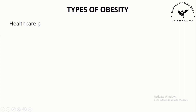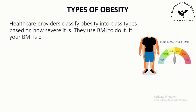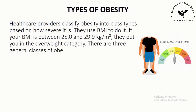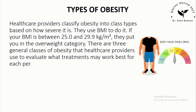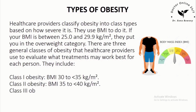Types of Obesity: Healthcare providers classify obesity into class types based on how severe it is, using BMI. If your BMI is between 25.0 and 29.9 kg/m², you are in the overweight category. There are three general classes of obesity: Class 1 — BMI 30 to less than 35 kg/m²; Class 2 — BMI 35 to less than 40 kg/m²; Class 3 — BMI 40+ kg/m².